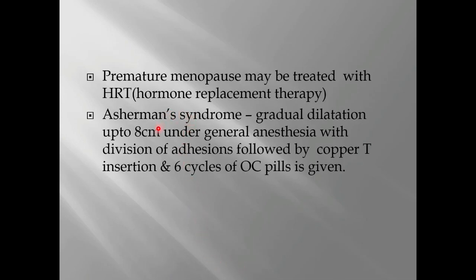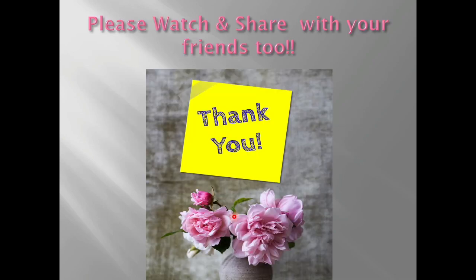For premature menopause, the patient has to be kept on hormone replacement therapy. For Asherman's syndrome, the patient has to be taken for dilatation and curettage under GA. After division and removal of adhesions, a copper IUD can be applied inside the uterus. This covers the topic of amenorrhea.